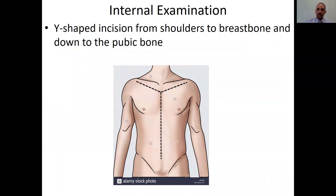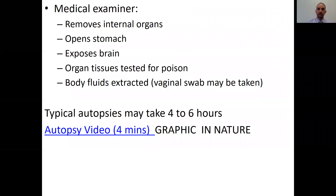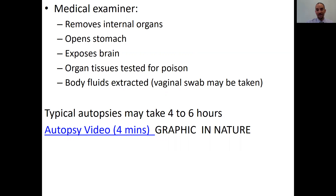Then we move to the internal examination. We make a Y-incision — as shown on screen — starting from each shoulder down to the mid-chest area, then all the way down the midline. This lets us study all the internal organs, look for bullets or foreign objects inside, and conduct toxicology studies for any poisons. We remove and weigh the internal organs, and can expose the brain to study it if necessary.